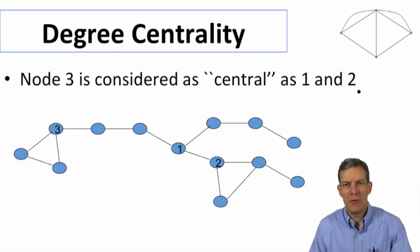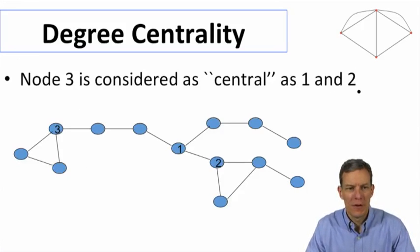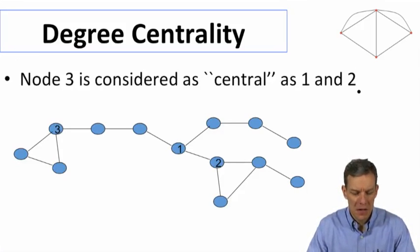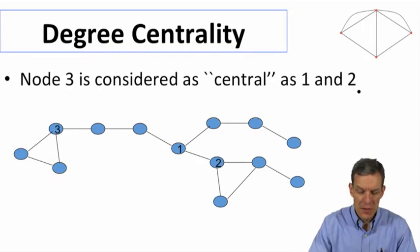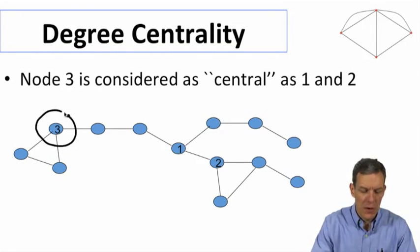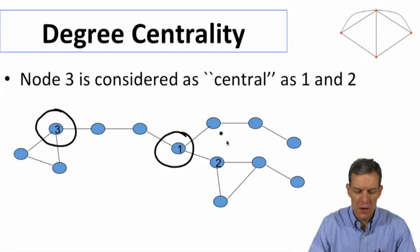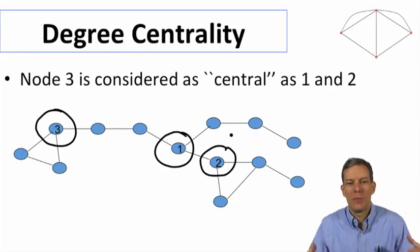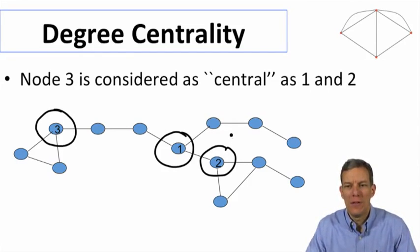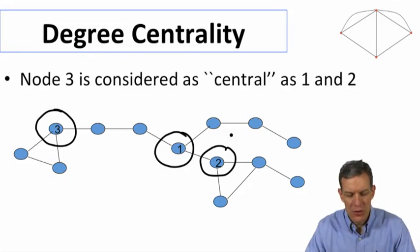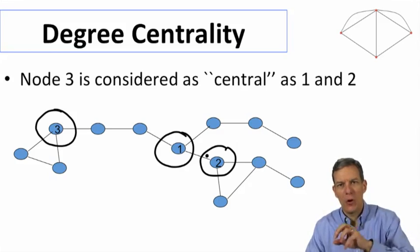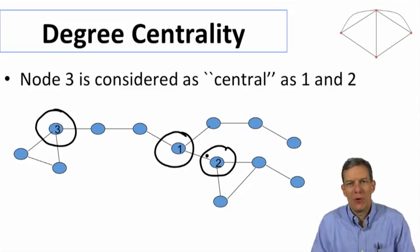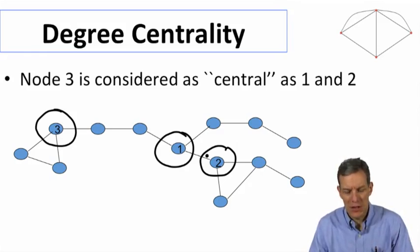But degree is actually going to miss a lot of what's going on in a network. For instance, node 3 has the same degree as node 1 or node 2, and yet we might think of node 3 as being less central than some of the other nodes. Degree isn't really capturing all of position — it's just saying how big your local neighborhood is. It's not saying where you are positioned in a network or how central you are in a deeper sense.